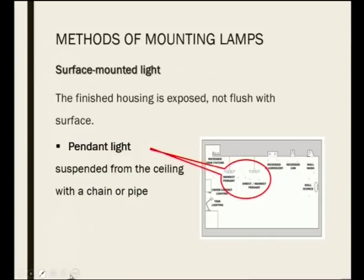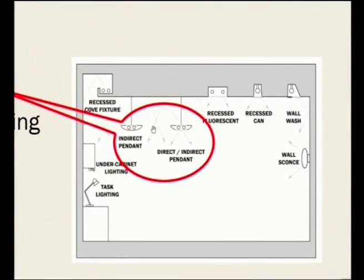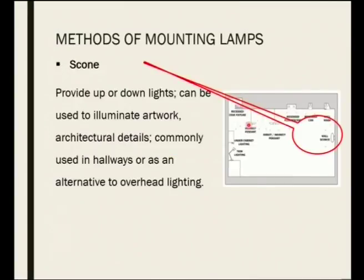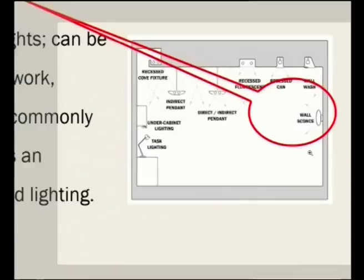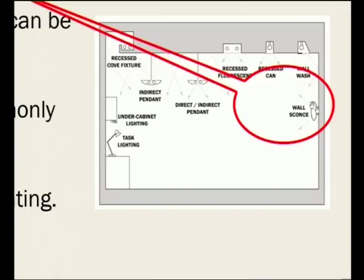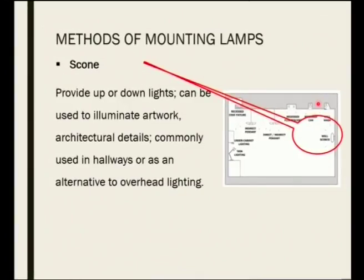Surface mounted lights have housing that is not flush or covered. A pendant just hangs down from the ceiling. There is a kind of indirect pendant where light reflects to the ceiling and then comes down, and another type that works both ways — direct and indirect — partly coming down and partly reflecting off the ceiling. Sconces are wall-mounted and provide up and down lighting. They are usually used to illuminate artwork or architectural details, in hallways, or as a replacement for overhead lighting.